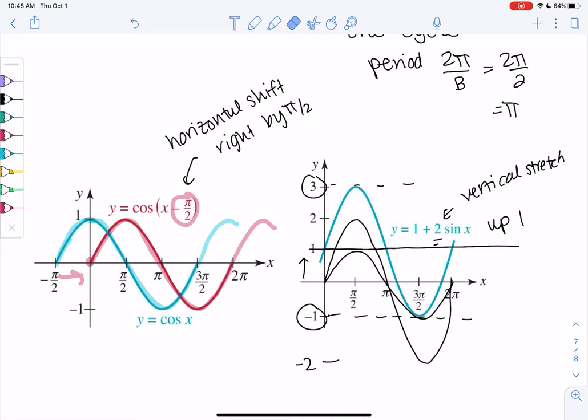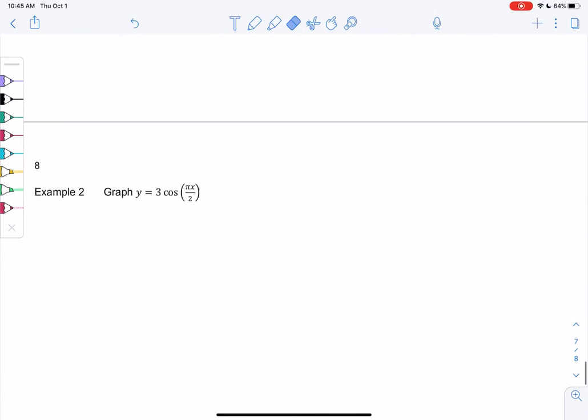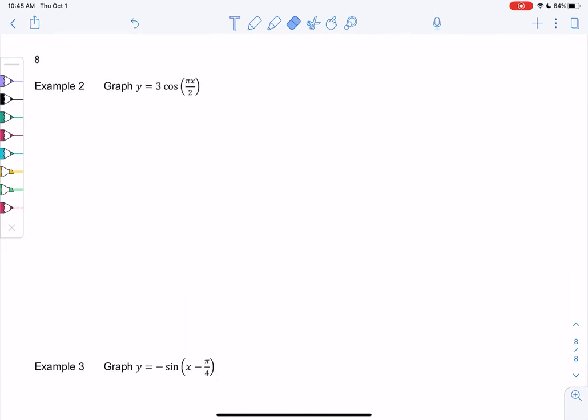So let's graph 2 by scratch. And then we'll be done. So 3 cosine. Let's graph cosine first. Cosine goes like this. Cos a period is 2 pi, one cycle. Pi is in the middle. And negative 1 to 1.